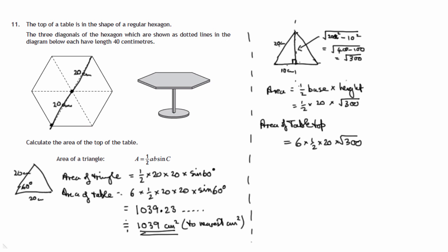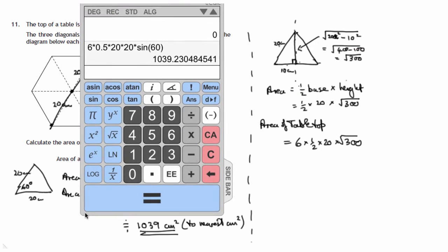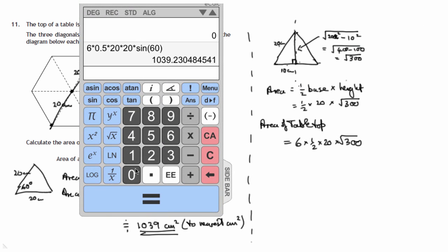And hopefully that'll give us the same as what we had before. 6 times a half, 0.5, times 20, times the square root of 300. Exactly the same answer. So that gives us 1039.23 and so on.